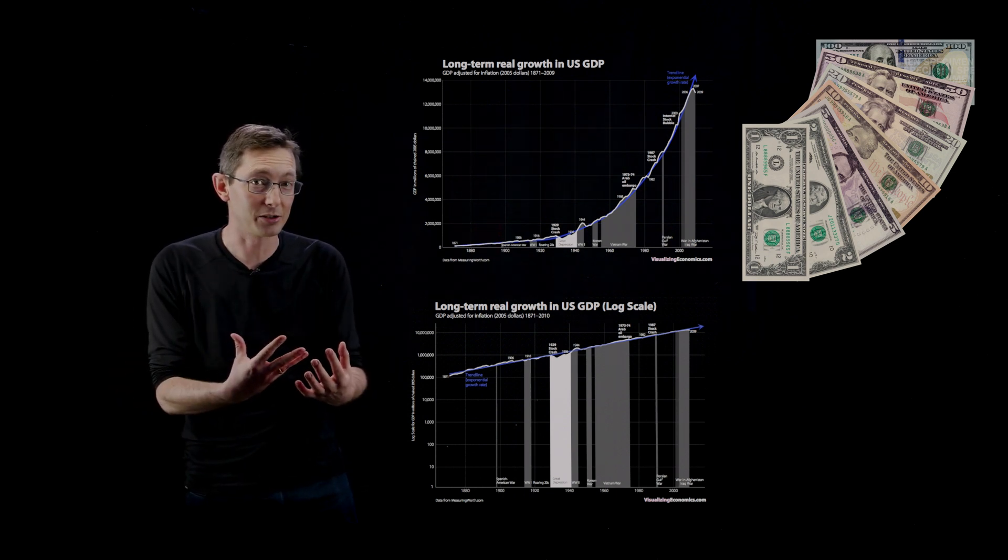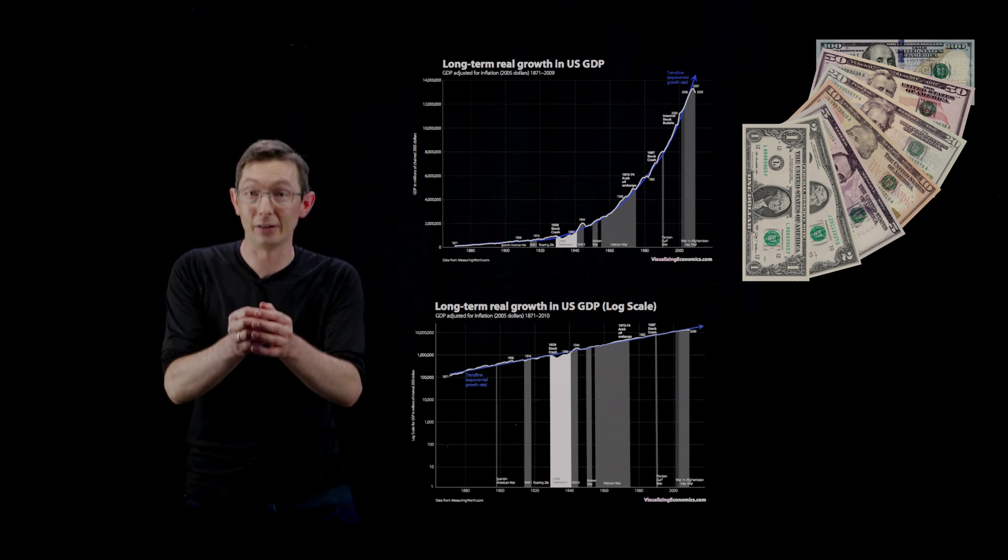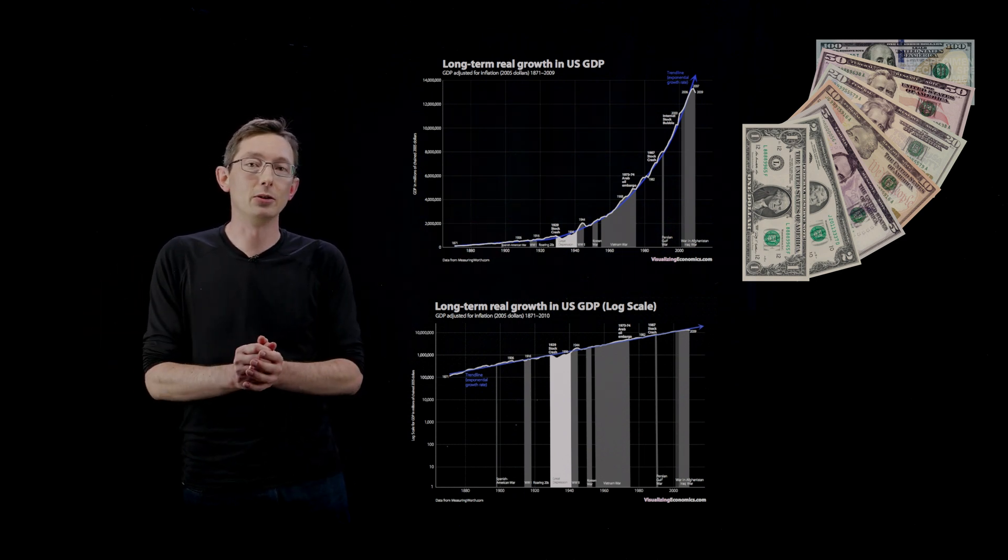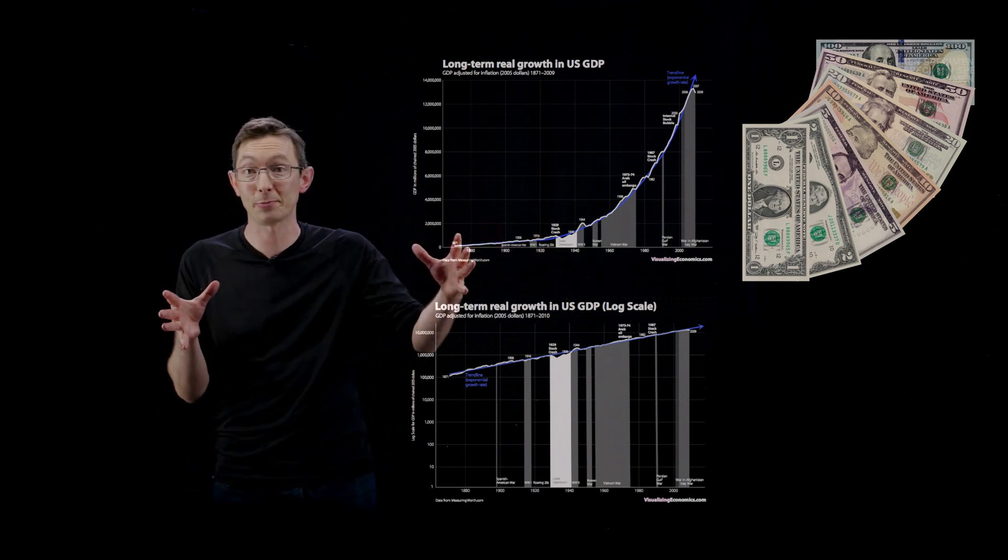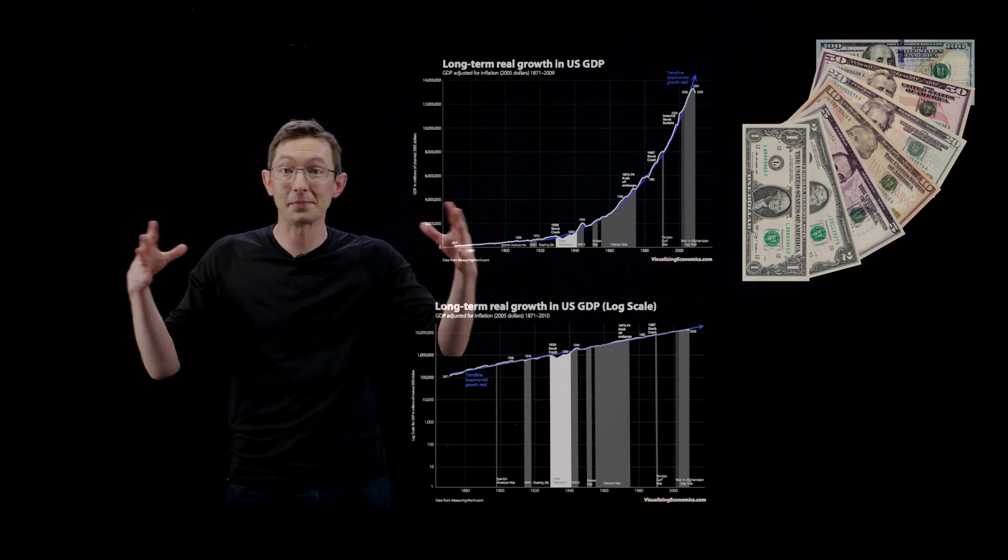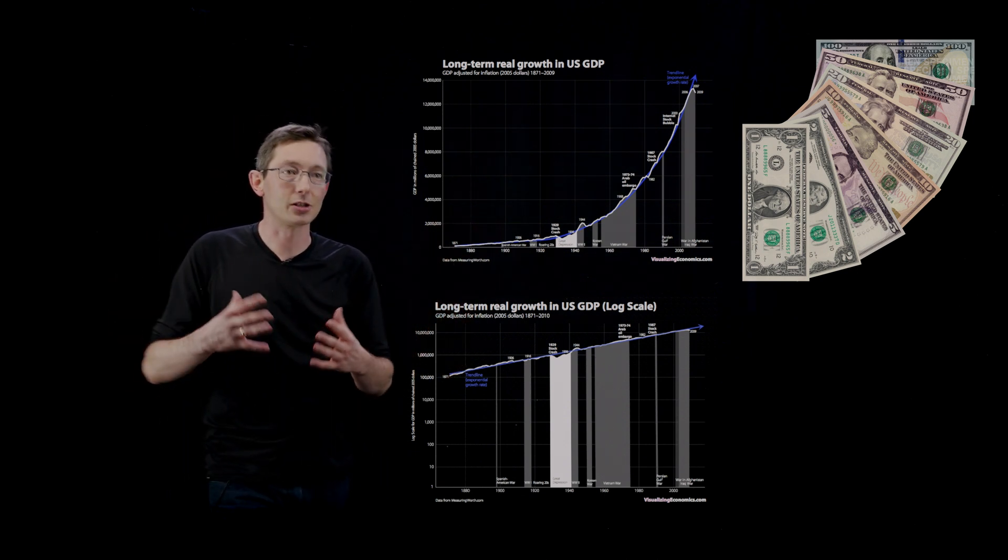So that just gives you a flavor for some of the many systems that exhibit exponential growth. If you look at bacteria in a petri dish, for a while they will grow exponentially. If you look at a disease that crosses a continent and goes to a fresh population, it's going to grow exponentially for a time. Lots of systems grow exponentially.